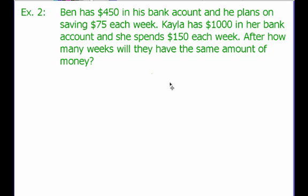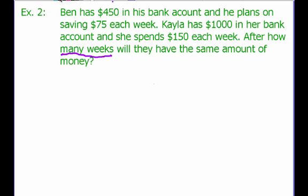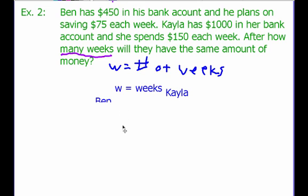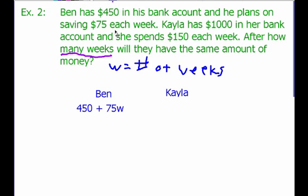What is our unknown? What's our variable going to be? We're trying to figure out after how many weeks, so let's use W to represent the number of weeks. Now we need to set up an equation. We're going to write an expression for each of our two students — Ben and Kayla. For Ben, we know he has $450 in his bank account and he is saving $75 each week. Saving tells us we are adding money, so Ben's expression is $450 plus $75W.